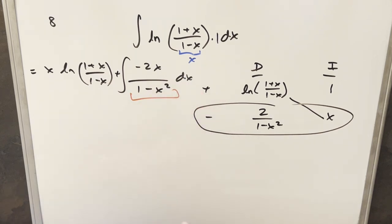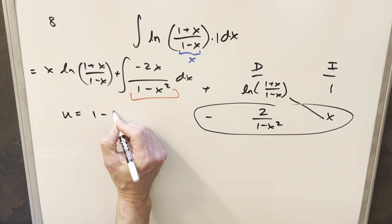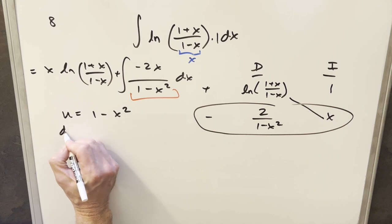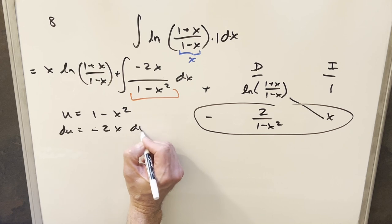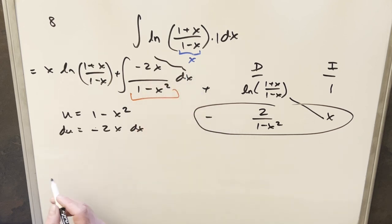But now for this here, I can just handle this with a u substitution. This is going to work out pretty nicely. So we'll say u is going to be 1-x². Take a derivative, du is going to be -2x dx. That's exactly what we have in the numerator there.